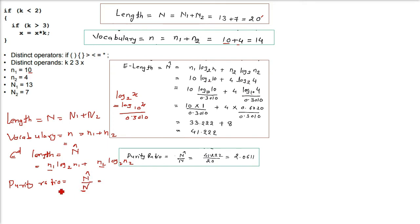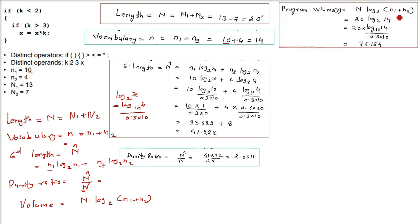Next thing is program volume or just volume. Volume will be capital N log base 2 of (n1 + n2). 20 is capital N, n1 plus n2 we already computed is 14. Change log base 2 to log base 10, divide by 0.3010. The result is 76.154.